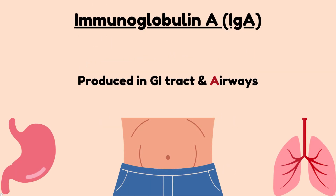Next, immunoglobulin A is produced in the GI tract and airways. To remember it, think of airways — it has the letter A, and A refers to IgA. If you remember the airways, you will remember the GI tract as well. A deficiency of immunoglobulin A can result in infections involving the airways together with the GI tract.